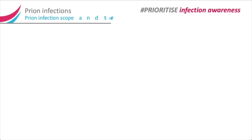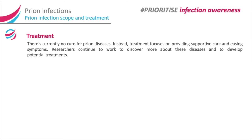Prion infection scope and treatment. There is currently no cure for prion diseases. Instead, treatment focuses on providing supportive care and easing symptoms. Researchers continue to work to discover more about these diseases and to develop potential treatments.